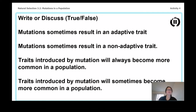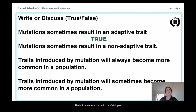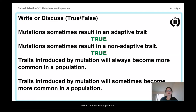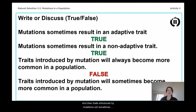Mutations sometimes result in an adaptive trait — that's true, we saw that with the ostrilopes. Mutations sometimes result in a non-adaptive trait — yeah, that's also true. Traits introduced by mutations will always become more common in a population — nope, false. Traits introduced by mutations will sometimes become more common in a population — yes, that's true.